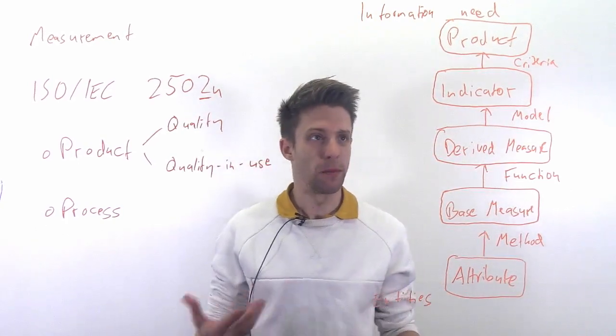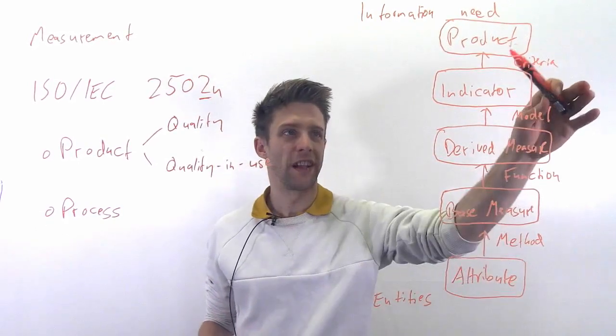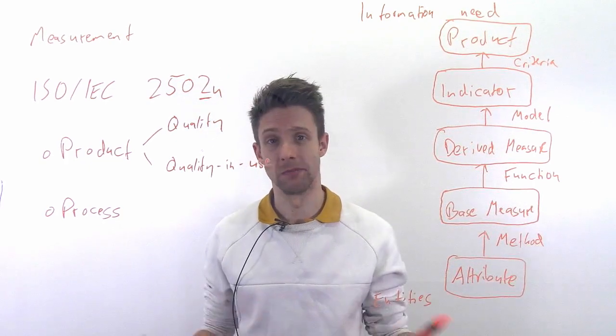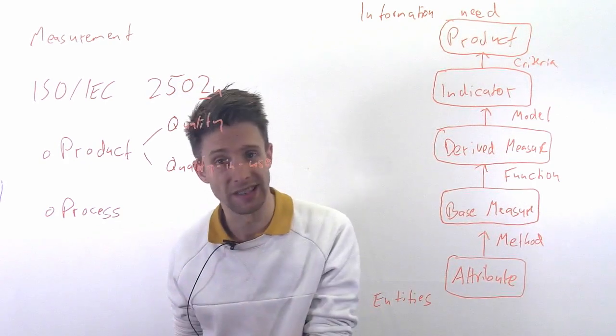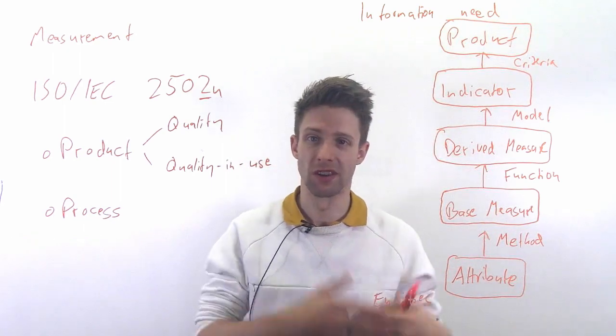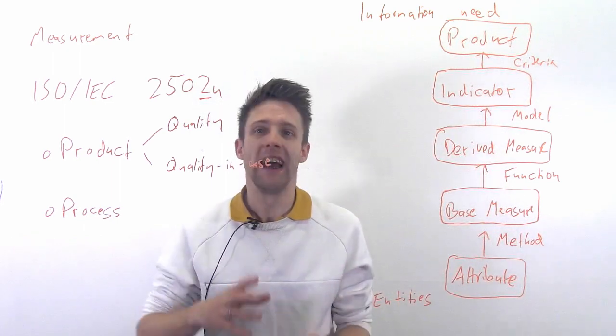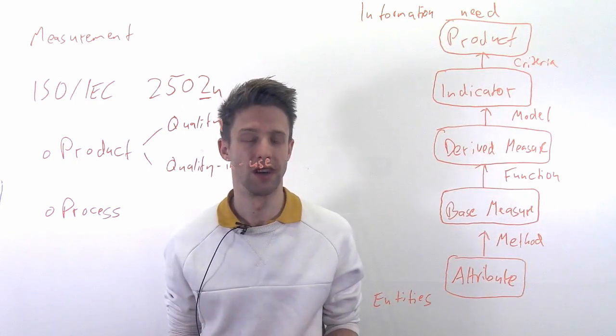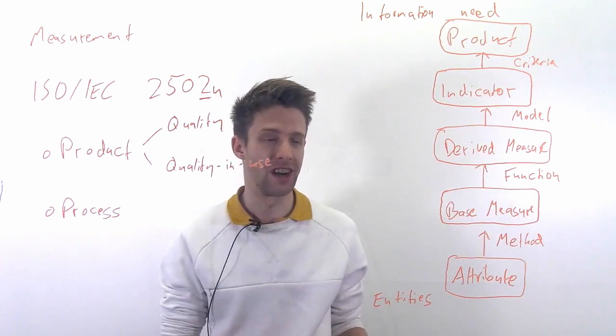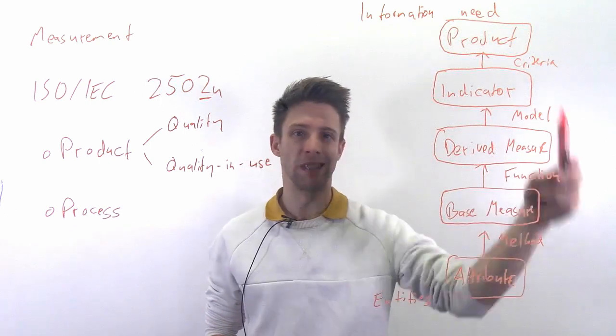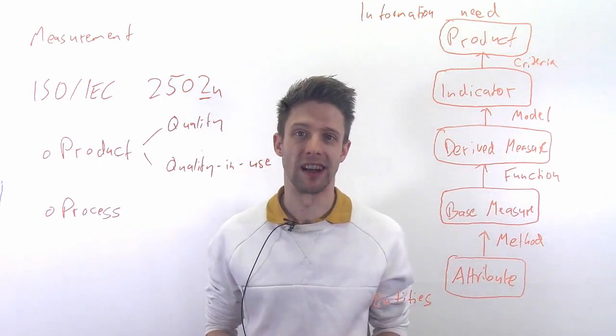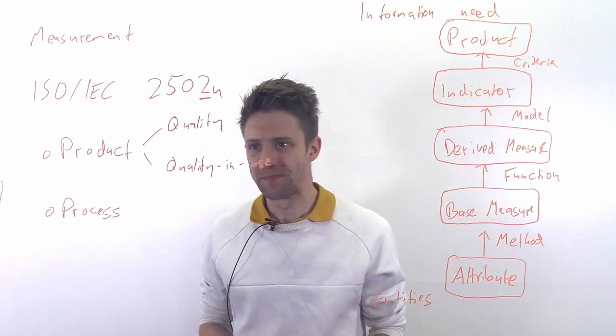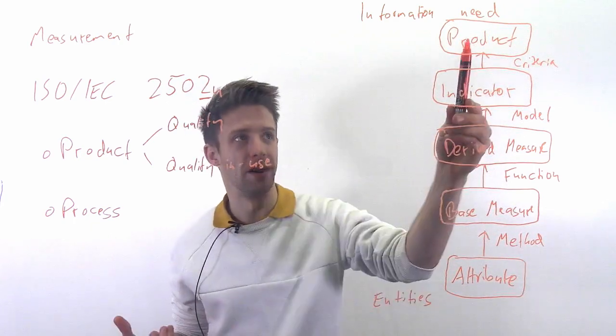And that's then something you can give to the scrum master and say, well look at this, our software quality, the amount of bugs we have, is red right now, we need to do something. So usually that's really when you get to something that is useful. Now just to make this complete, we have attributes, we want to measure them in a base measure, and we need to have some kind of method of measuring them - for example, counting the lines in a source code, counting the amount of bugs in the bug reporting system in the last five days.